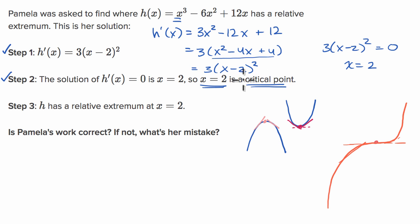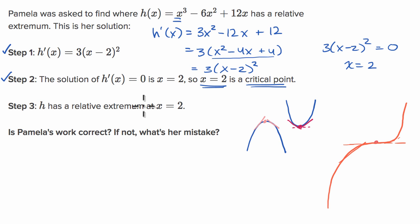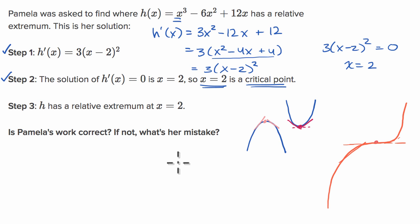You could say it's a critical point, and step two is correct. But in order to make the extremum conclusion, you would have to test what the derivative is doing before and after that point, and verify that it is switching signs. Let's make a little table here.